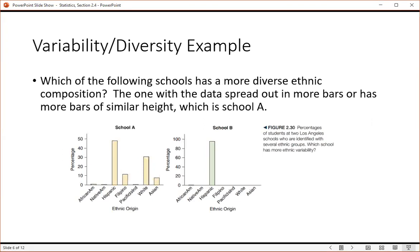Which of the following schools has a more diverse ethnic composition? So we go through and we look at these, you can see that in School B, basically all of the students are of one ethnicity. So we would say that that has very low variability, very low diversity.